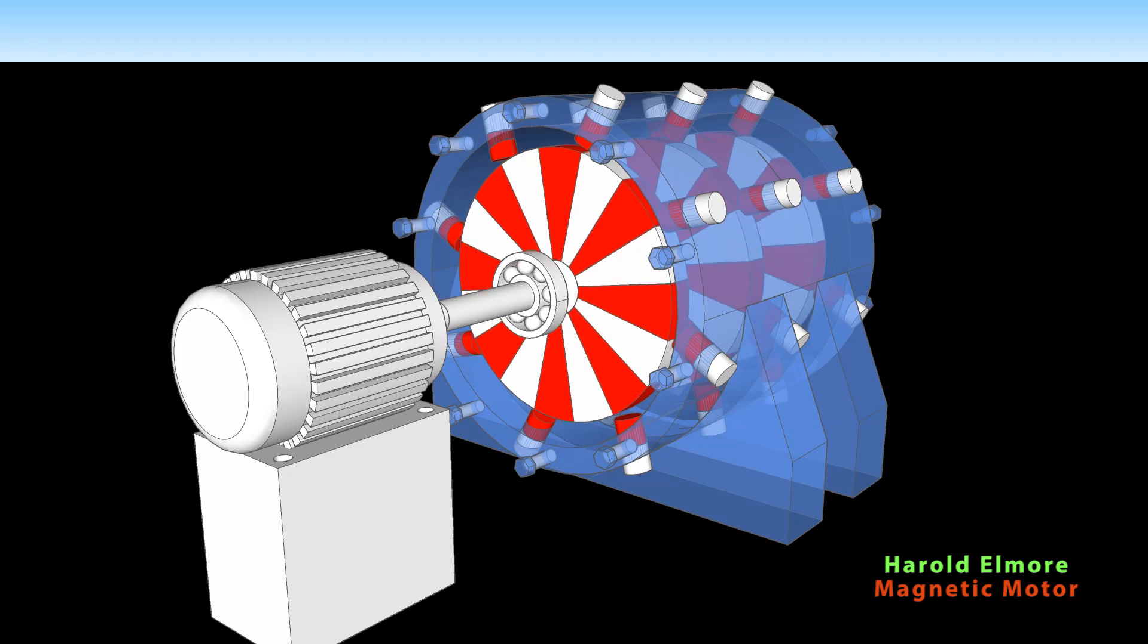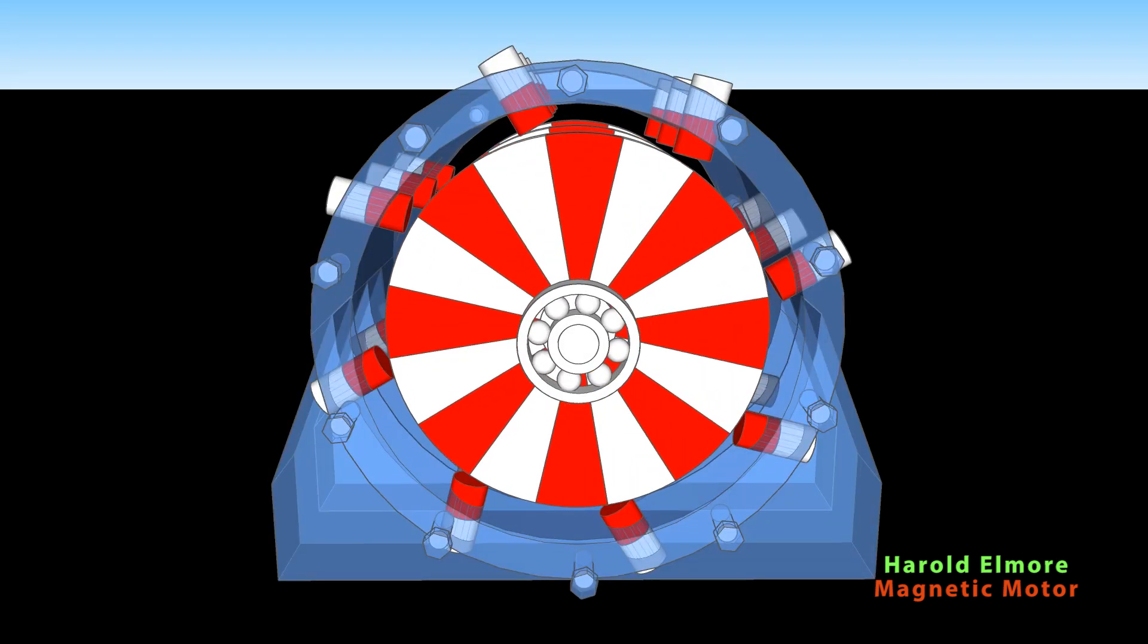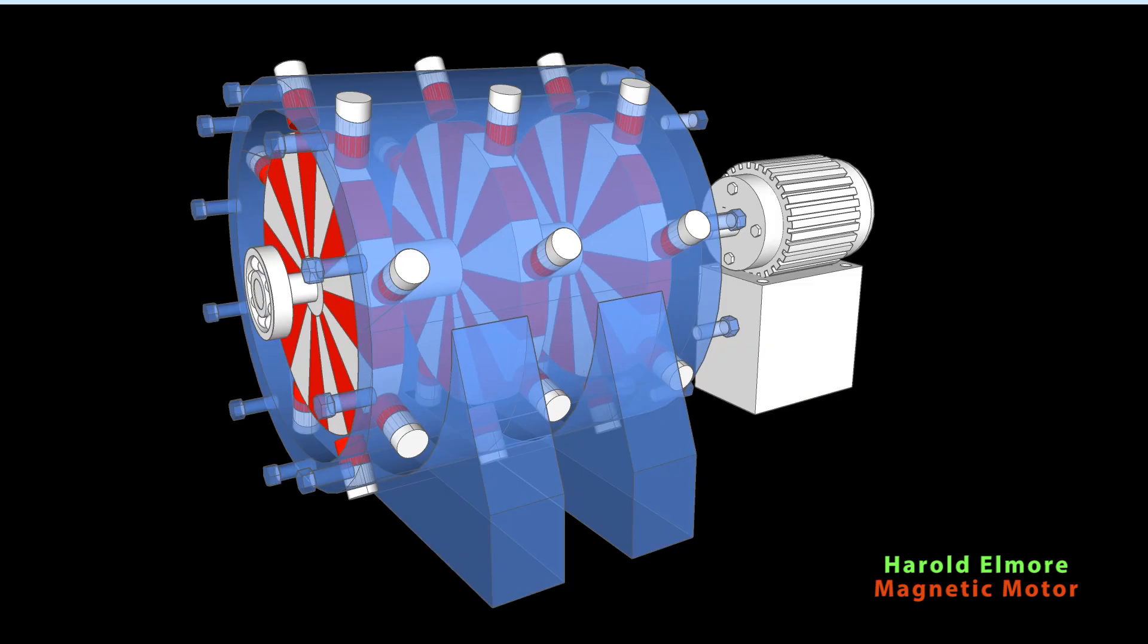So this was just a short intro. But today we are exploring the Harold Elmore magnetic motor propulsion system. On my left side is the image. It's really amazing motor. So as you can see now in front of my face there is animation. It's really not that complicated motor. And as you can see it has some stator and the rotor in the middle.